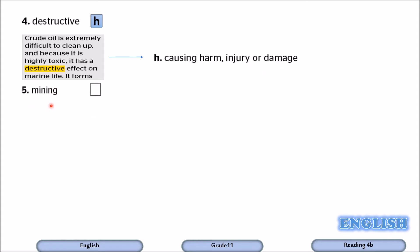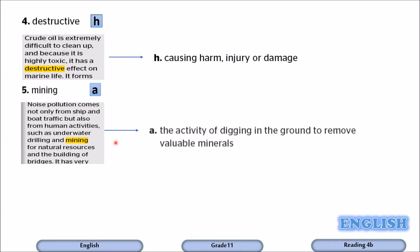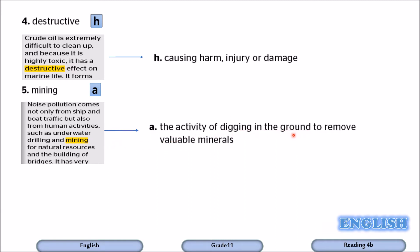Let's move to number five: mining. Noise pollution comes not only from ship and boat traffic, but also from human activities such as underwater drilling and mining for natural resources, and the building of bridges. Mining goes with A. Mining means the activity of digging in the ground to remove valuable minerals.